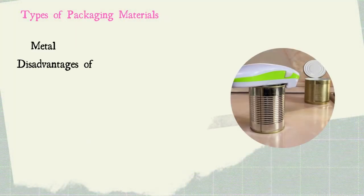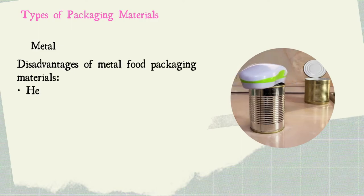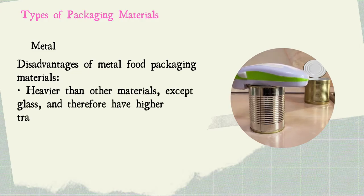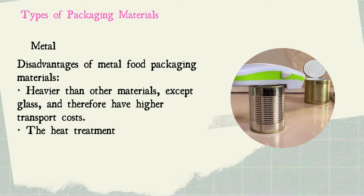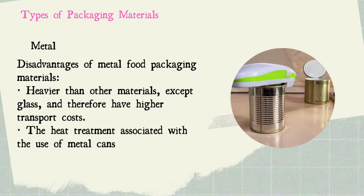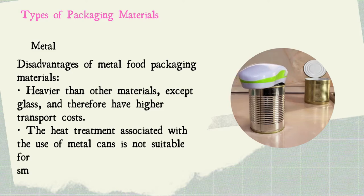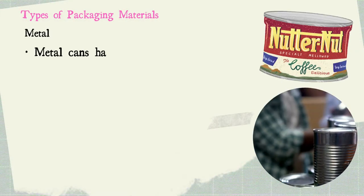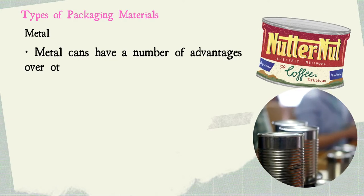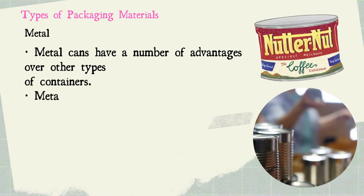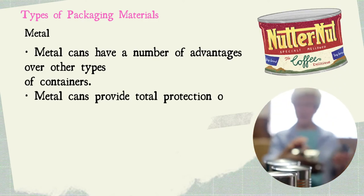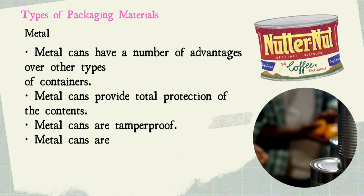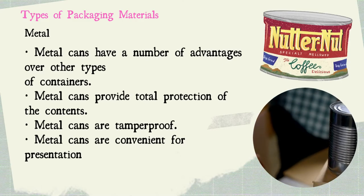The last packaging material is metal. Disadvantages of metal food packaging materials: it is heavier than other materials except glass, and therefore has higher transport costs. The heat treatment associated with metal cans is not suitable for small-scale production. In addition, metal cans have a number of advantages over other types of containers: metal cans provide total protection of the contents, are tamper-proof, and are convenient for presentation.